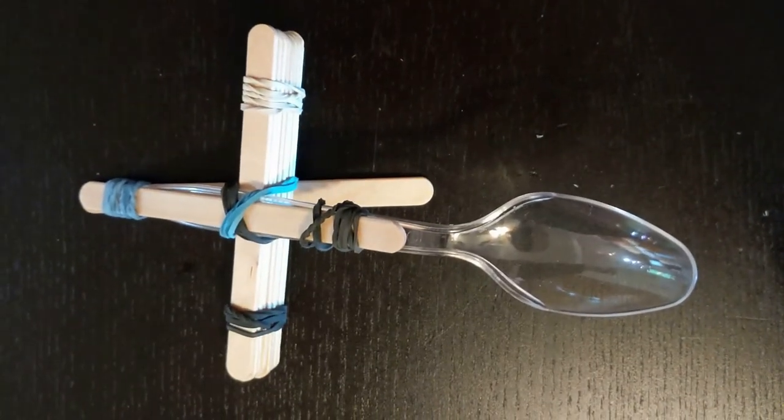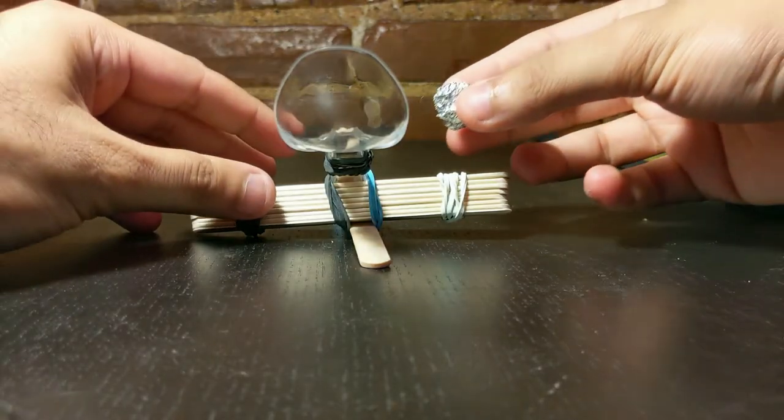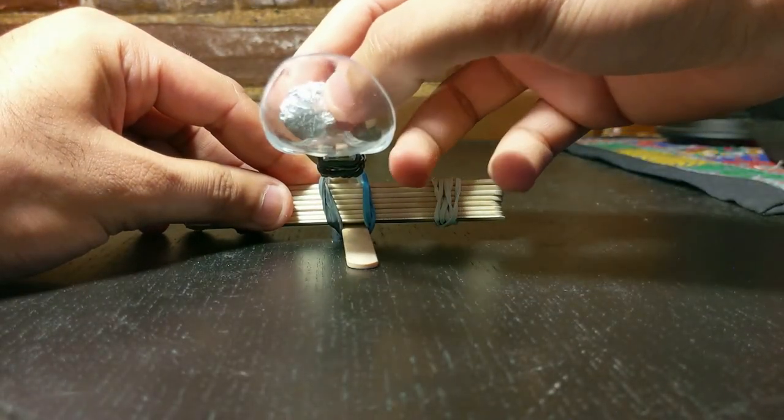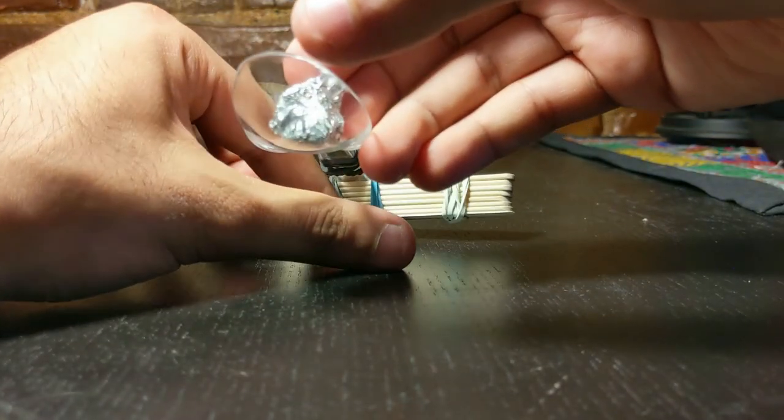Now it's time to test your catapult by launching your soft projectile safely. Remember, this is only one design but you can make your own changes. What happens if you add more popsicle sticks or a different spoon or projectile?